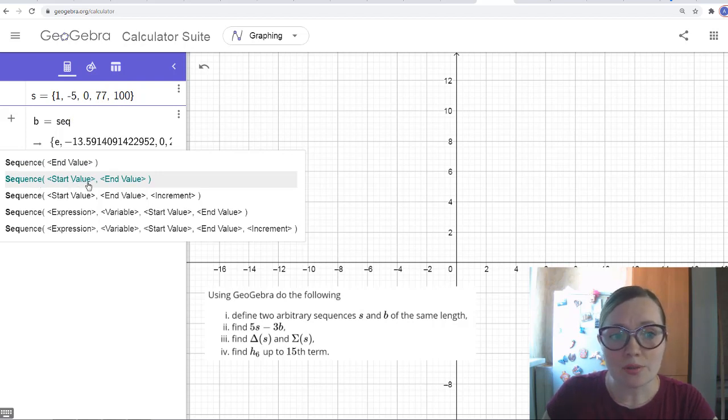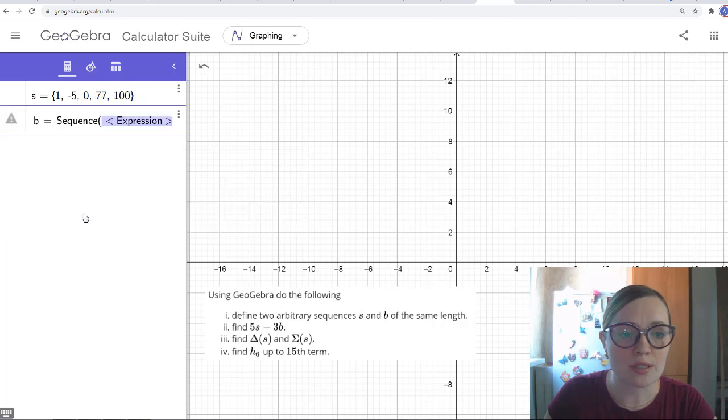Here, start value and end value, the same sense. We start with something, some integer, and end with some integer with increment 1. Here we can change the increment. Let's say we want to make it 0.5 and so on. And here we can introduce the expression. For example, it can be some function which determines the sequence.